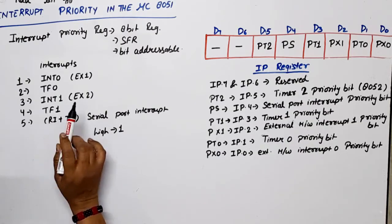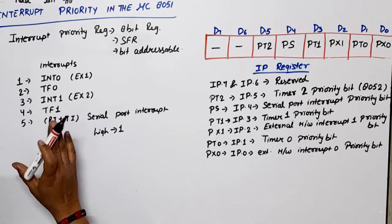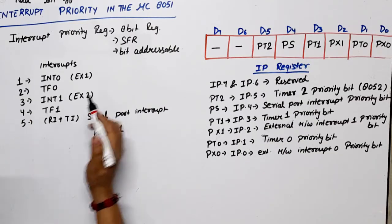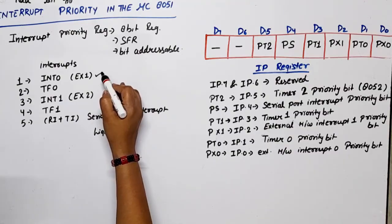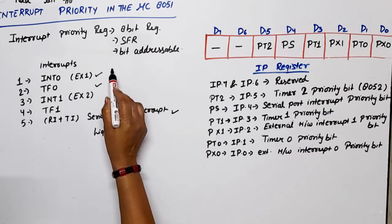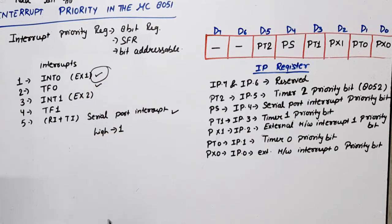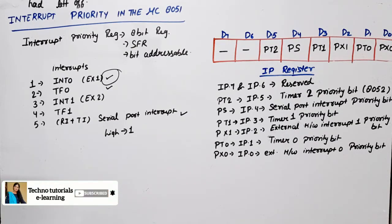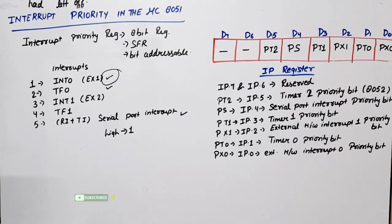This default sequence applies when the 8051 is powered on. If INT0, TF0, and serial port interrupt are all active, access will be provided to INT0 first. However, in 8051 there is a register called the interrupt priority register, which can change the sequence of priority by assigning the highest priority to any one of the interrupts.